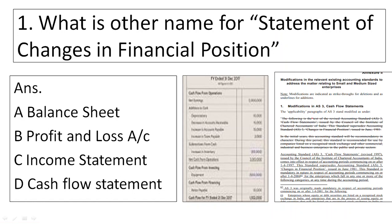What is the other name for statement of changes in financial position? Option A is balance sheet, which is actually a statement of financial position, not the statement of changes in financial position. In a balance sheet, you will find information about assets, liabilities, and owner's equity of a business firm for an accounting period.